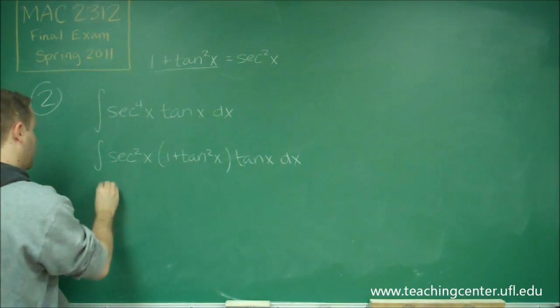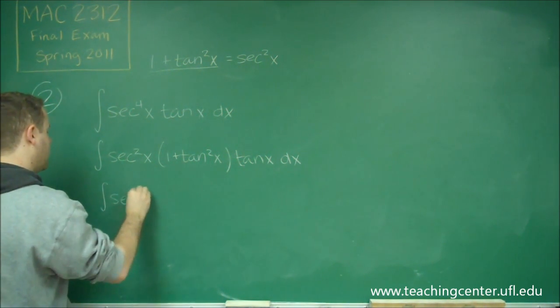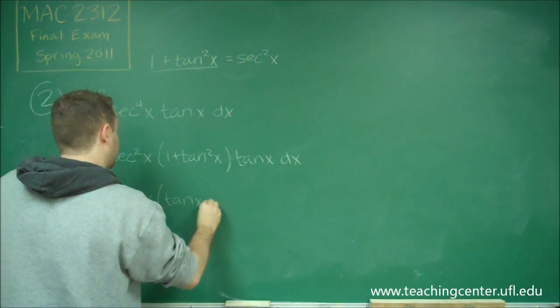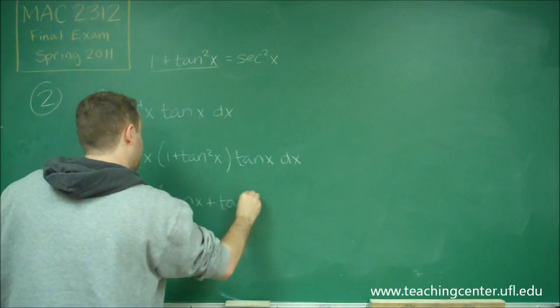So finally, we have secant squared x, and then we have tan x plus tan cubed x dx.